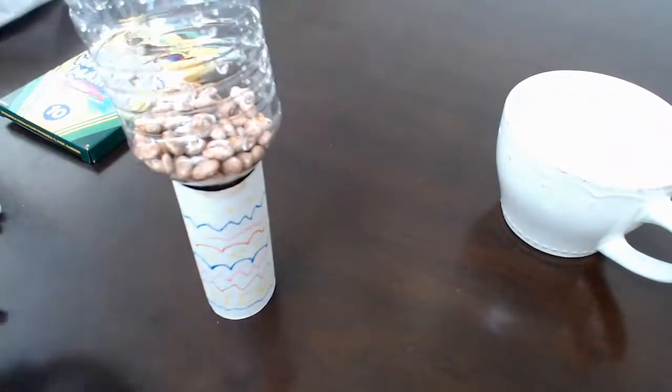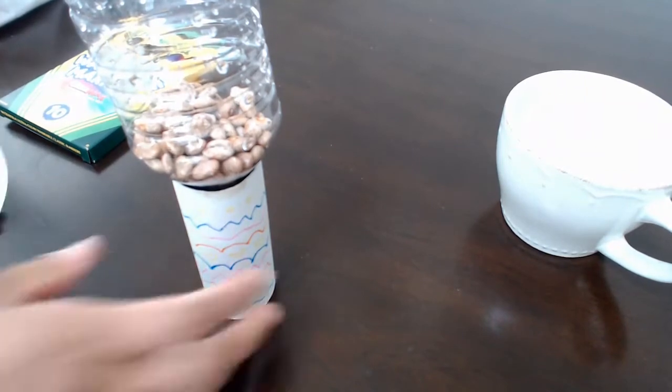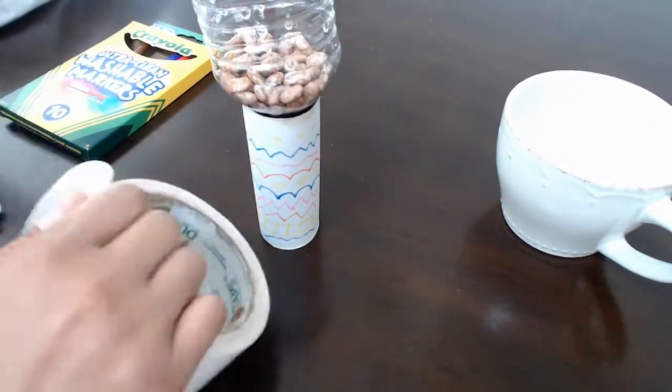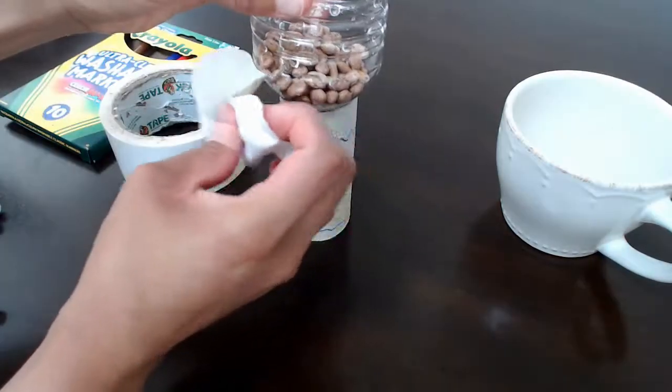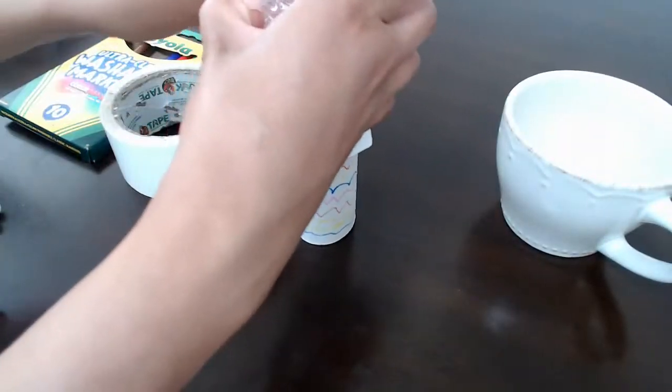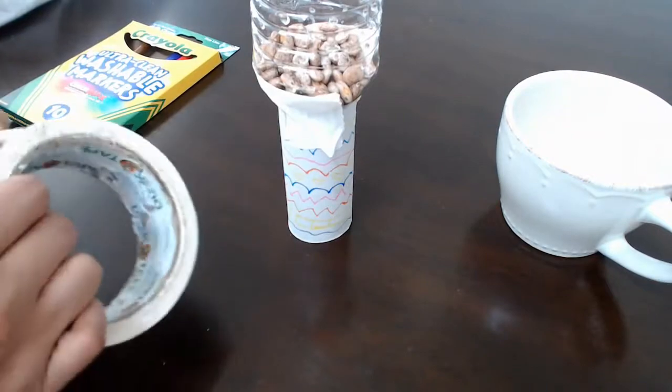Okay, and we close the water bottle and put it on top of our toilet paper roll. And now we're going to be taking a piece of heavy duty tape and you're simply going to be taping your water bottle to your toilet paper roll.